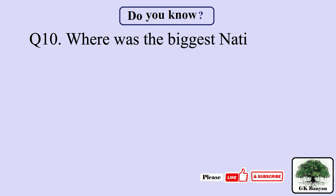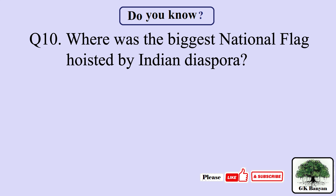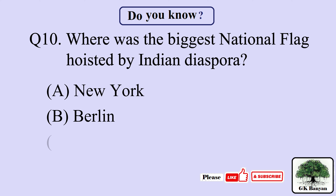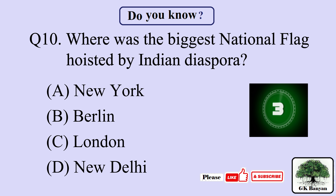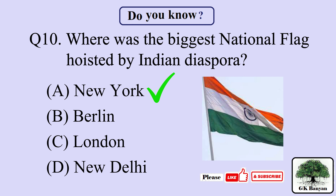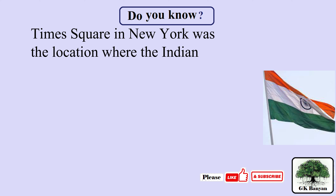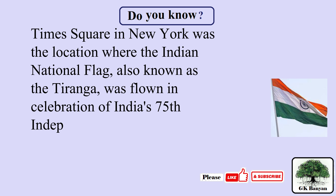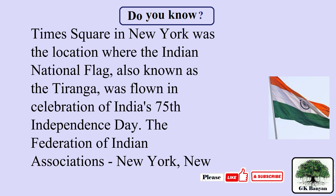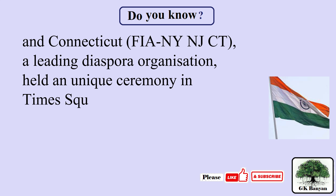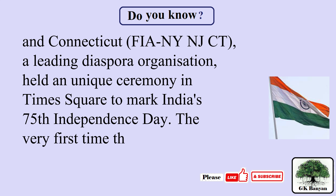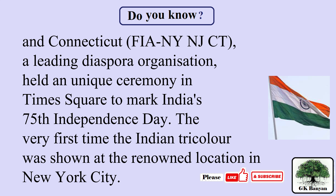Question 10. Where was the biggest national flag hoisted by the Indian diaspora? Your options are A. New York, B. Berlin, C. London, D. New Delhi. The right answer is A. New York. Times Square in New York was the location where the Indian national flag, also known as the Tiranga, was flown in celebration of India's 75th Independence Day. The Federation of Indian Associations of New York, New Jersey and Connecticut held a unique ceremony in Times Square — the very first time the Indian tricolor was shown at that renowned location.